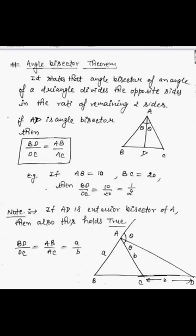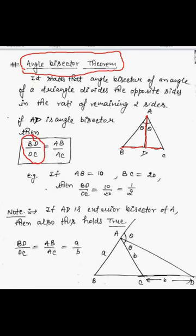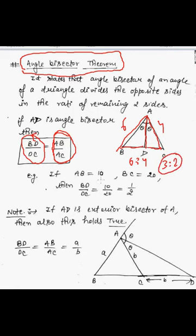Now we will discuss the properties based on the angle bisector — the angle bisector theorem. The angle bisector divides the opposite side in the ratio BD:DC, which equals the ratio of the adjacent sides AB:AC. For example, if AB is 6 and AC is 4, then BD:DC = 6:4 = 3:2. If AB is 10 and BC is 20, then BD:DC = 1:2.